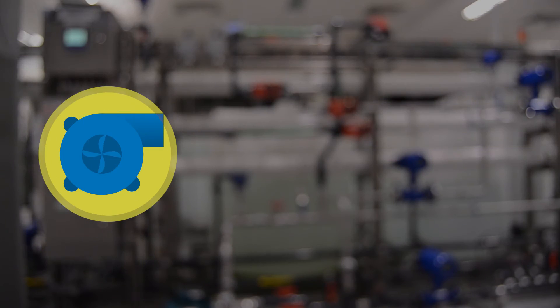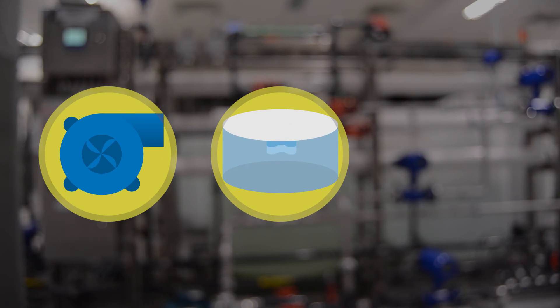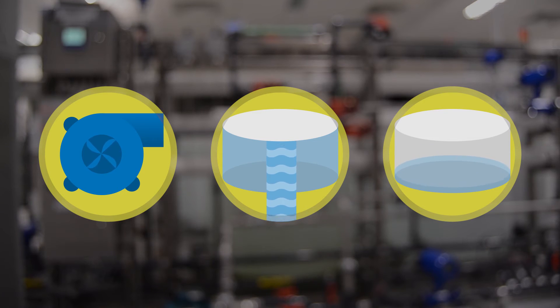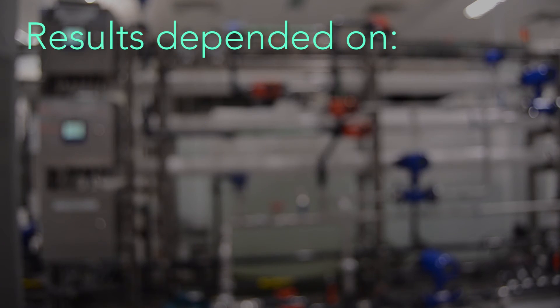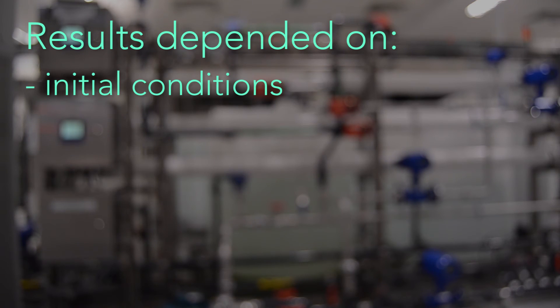The attacks resulted in pumps malfunctioning and tanks overflowing or emptying down to very low levels. The researchers found that the seriousness of the attacks depended on the initial conditions of the system, and how much water was being demanded at the time.